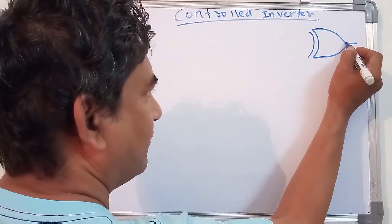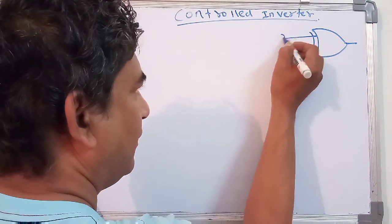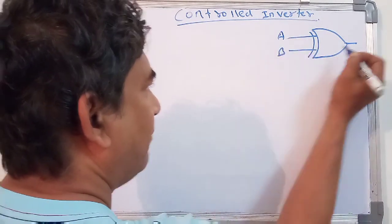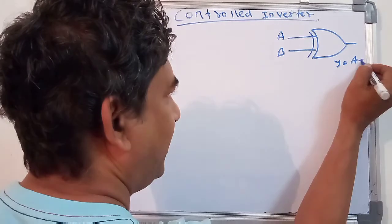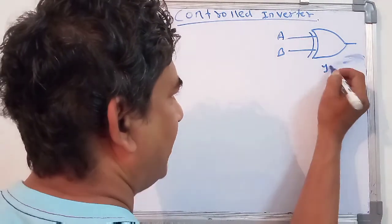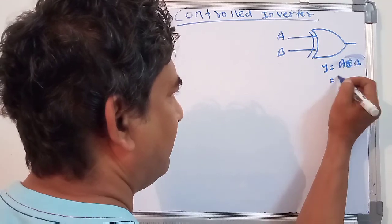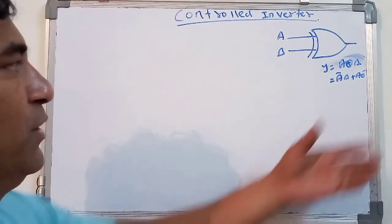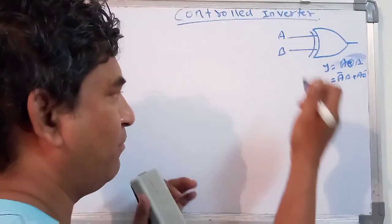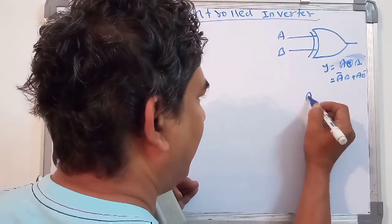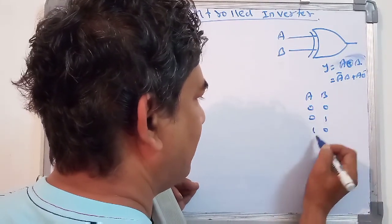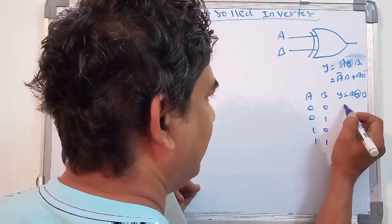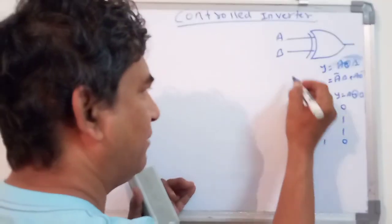For the XOR gate with inputs A and B, you will get the output: Y = A ⊕ B, which can also be written as A̅B + AB̅. The truth table for the XOR gate is: inputs 0,0 → output 0; inputs 0,1 → output 1; inputs 1,0 → output 1; inputs 1,1 → output 0.